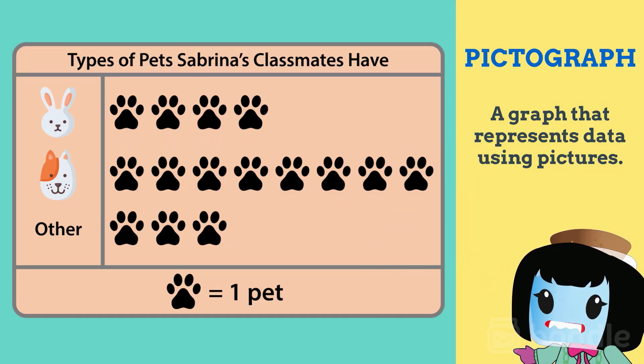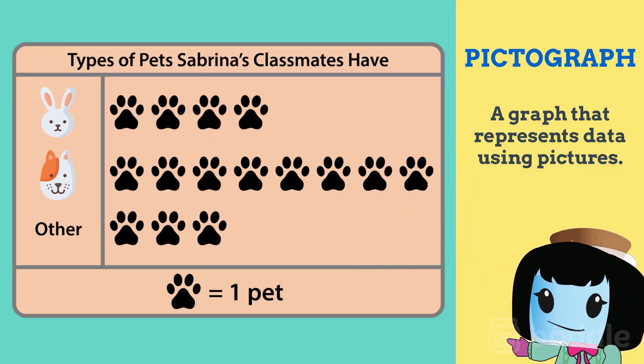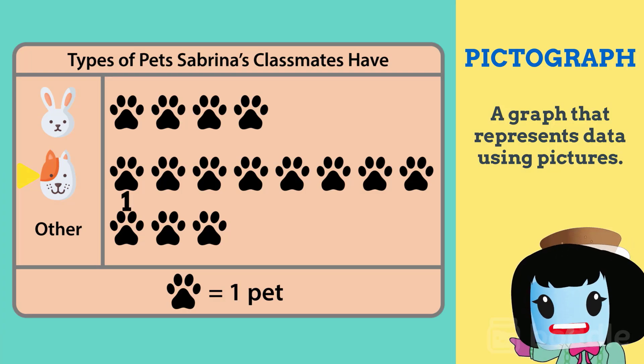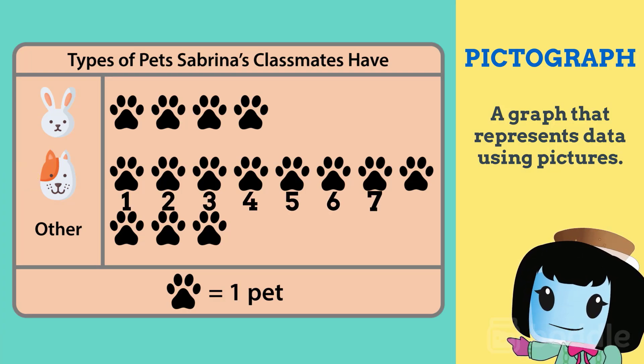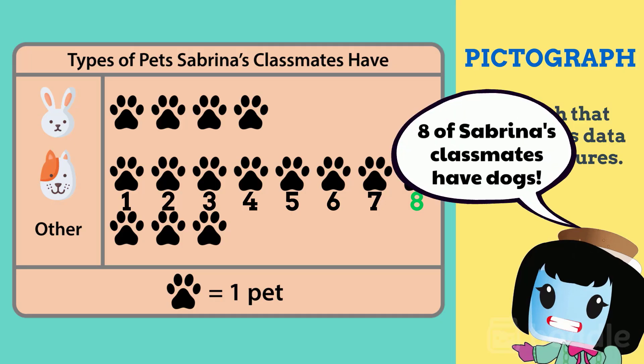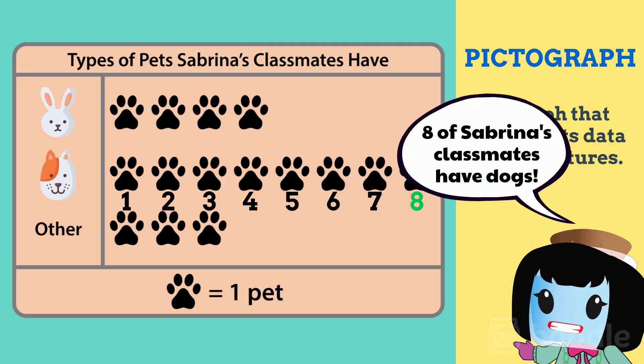Now, let's look at the part of the graph that represents dogs. There are eight paw prints, so that means eight of her classmates have dogs.